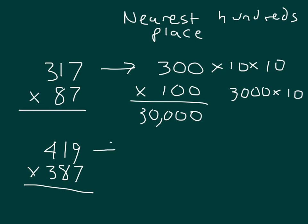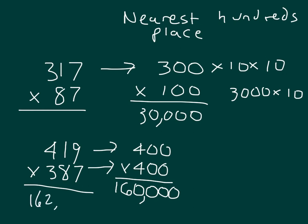For our other problem there, 419 times 387, 419 goes to 400. 387 also goes to 400. And if we multiply those two together, 4 times 4 is 16, and then I have 100 times 100, which is 1, 2, 3, 4 zeros there. And then so I get 160,000 as our estimated product. Our actual product here is 162,153. I used a calculator to figure that out.